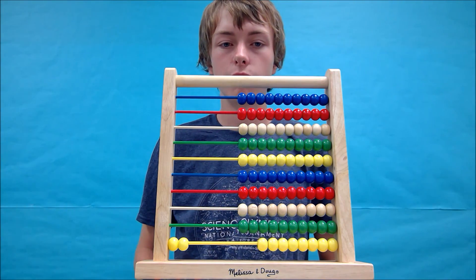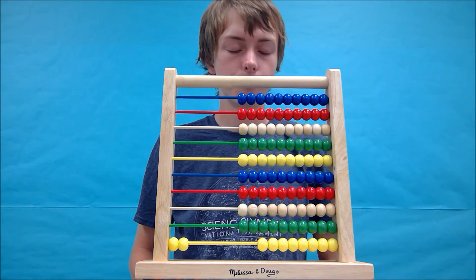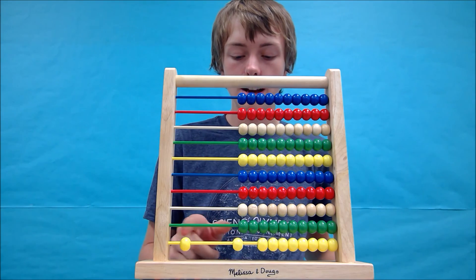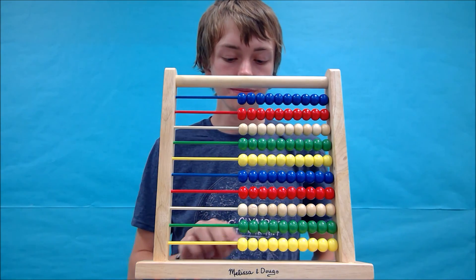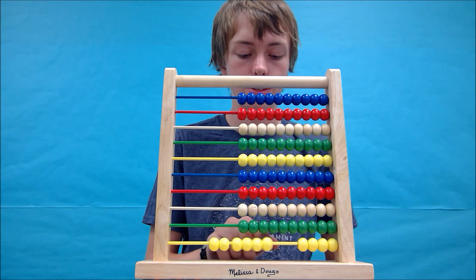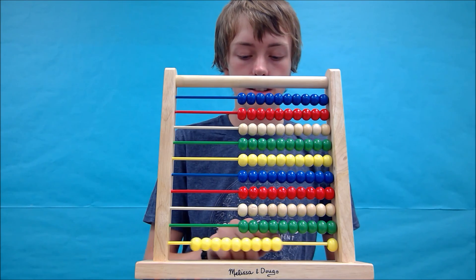All right, let's try one more before I give you some sample problems to try. Let's try 9 minus 5. Start by forming the first number: 2, 4, 6, 8, 9.